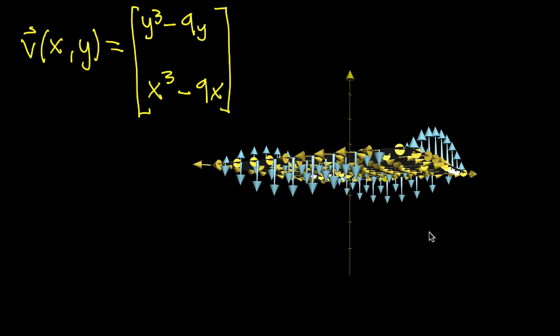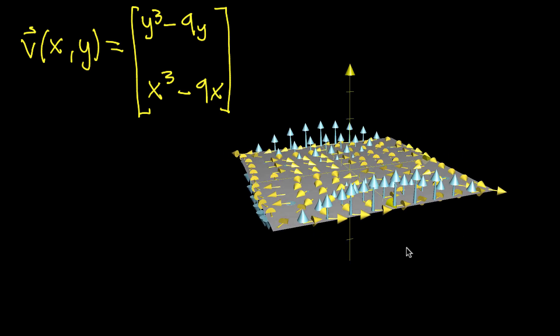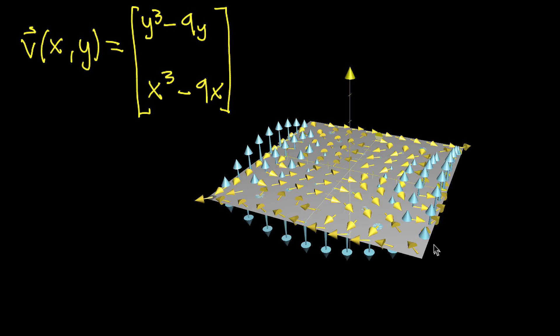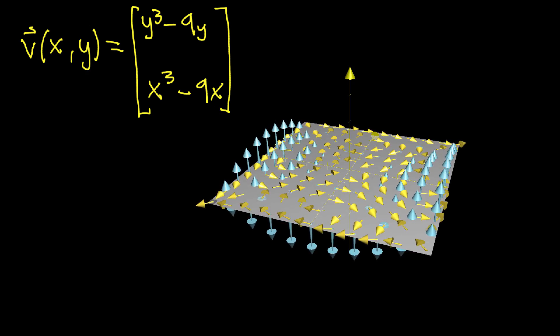Now this is kind of complicated because there's two different vector fields going on. One of them, all the vectors are perpendicular to the x-y plane. So let's just kind of take it piece by piece and see if we can understand it.